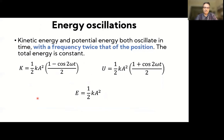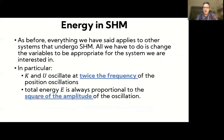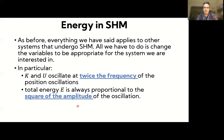Although we derived these results for mass-spring systems, the same analysis applies to simple pendula and to any system undergoing simple harmonic motion. In general, both kinetic and potential energy oscillate at twice the frequency of the position, and the total energy is always proportional to the square of the amplitude of oscillation.